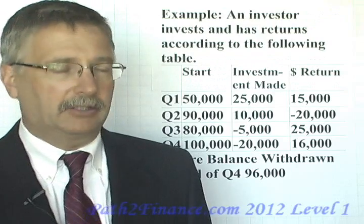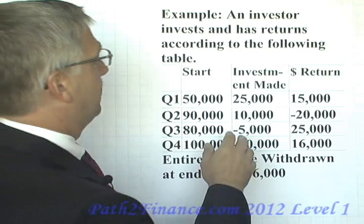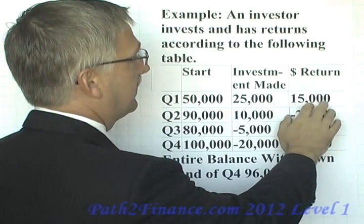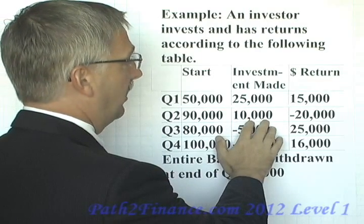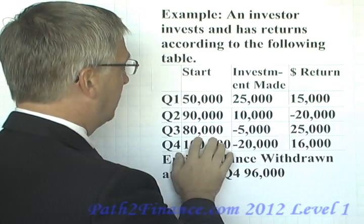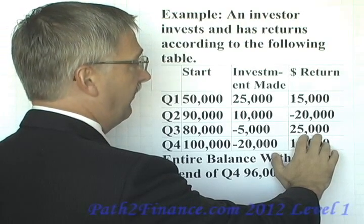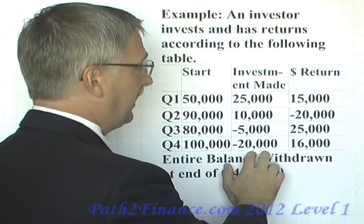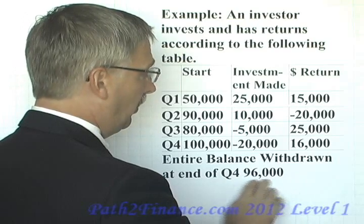Let's walk through an example of an IRR calculation. In this table we describe the cash flows of a hypothetical investment. In quarter one, the balance started at $50,000 and our investor contributed $25,000; the investment returned $15,000. In quarter two, we started with $90,000, the investor added $10,000, but the investment lost $20,000, leaving a beginning balance of $80,000 for quarter three. The investor withdrew $5,000 in quarter three, but the investment returned $25,000, leaving a balance of $100,000. In quarter four, the investor took out $20,000 and the investment returned $16,000; then the investor withdrew the whole remaining balance of $96,000.